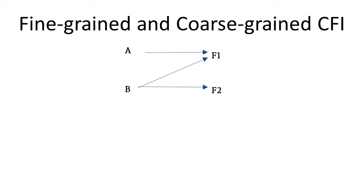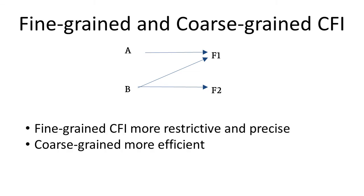Fine-grained CFI, however, would ensure that function F2 can only be returned to point B. This can be done in a couple of ways. First, we could use multiple labels for a more precise control flow graph, where point B checks a set of possible destinations instead of a single label. We could also use code duplication — making a copy of function F2 available only for point A, while the original F1 is reachable from B. Fine-grained CFI comes at a cost of more overhead due to extra complexity. However, as we will see, coarse-grained CFI might not always be as safe as initially thought.